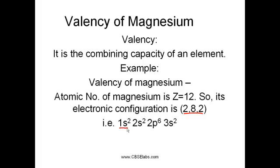1s2 forms the K shell. 2s2 and 2p6 come under the L shell. And 3s2 comes under the M shell.